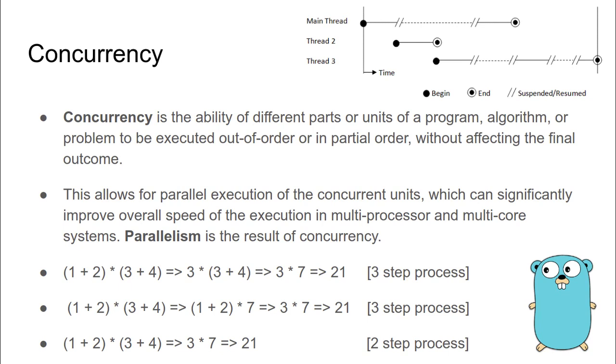So in this whole process, by running the concurrent parts of our program or algorithm in parallel, we have reduced the number of steps required to get to the final output without affecting the correctness of the final output. And by now I hope that you have understood what is concurrency, what is parallelism, and how these concepts can help us improve our overall speed of execution.